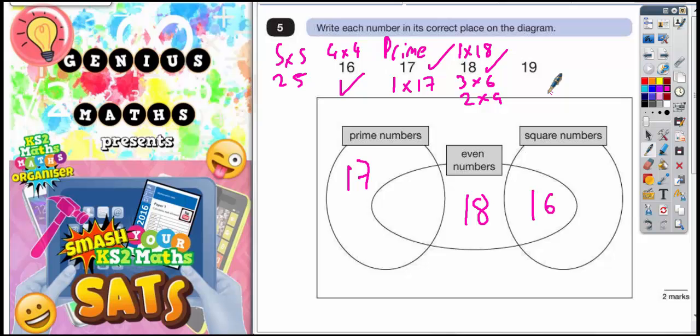Last number, 19. Well, 19 is a prime number again because the only pair of factors to multiply to make it is 1 times 19. And it's not an even number, so it can't go in this bit. So it's got to go here. So 17 and 19 are both prime numbers, but not even.